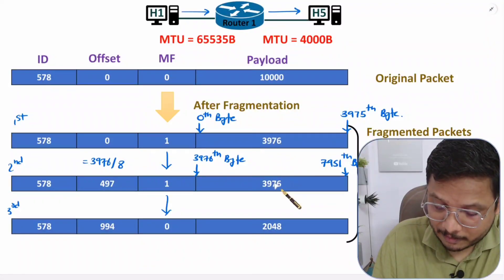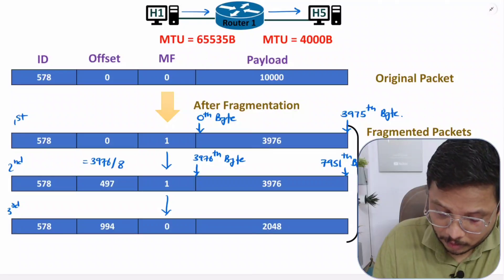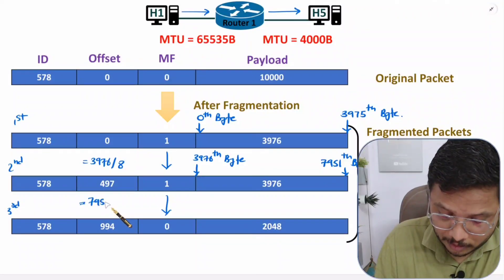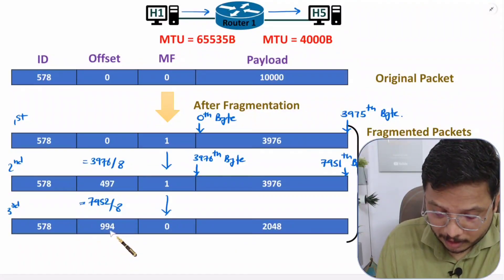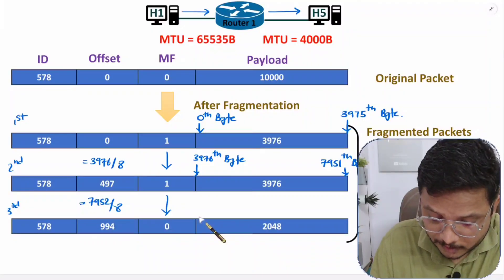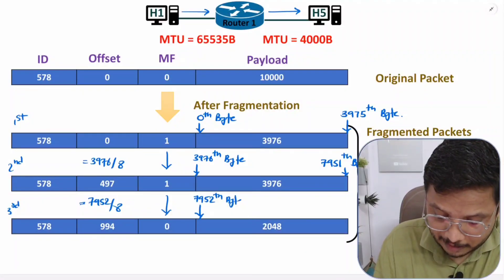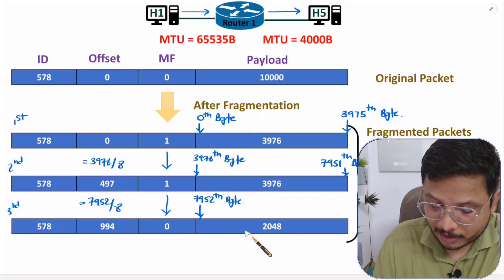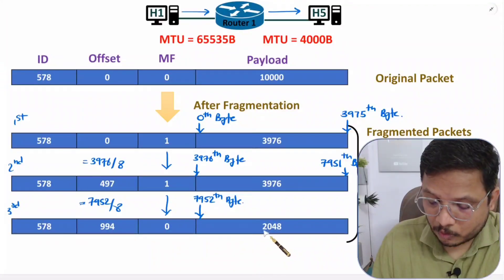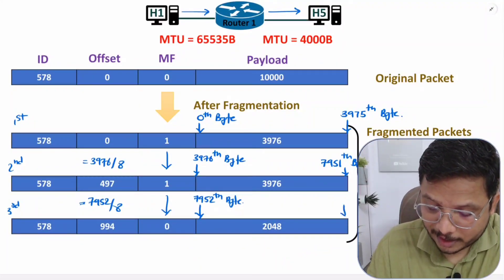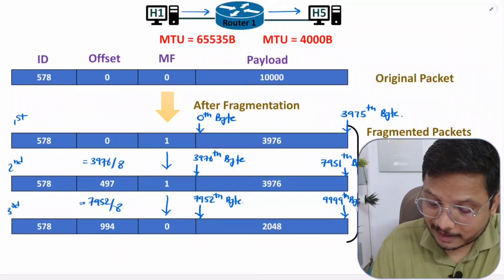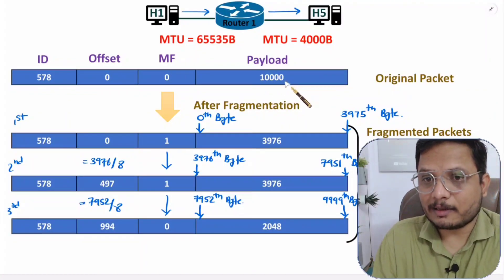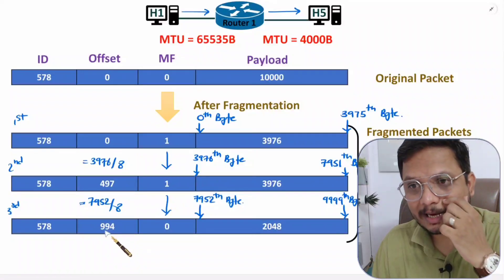The second fragment also carries 3976 bytes, so together the first two fragments cover 7952 bytes. The offset for the third fragment is 7952 divided by 8 equals 994. So the third fragment has offset 994, meaning it starts at byte 7952. Adding 2048 bytes gives us 7952 plus 2048 equals 9999 as the last byte — meaning in total bytes 0 to 9999, which is 10,000 bytes.